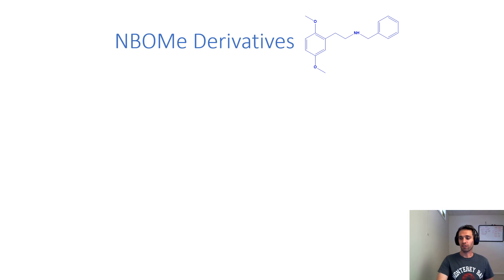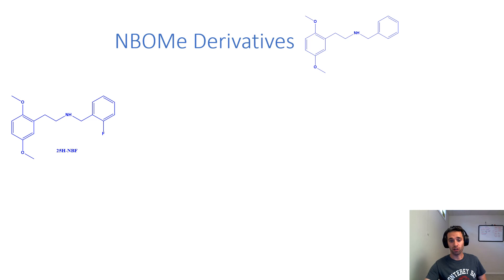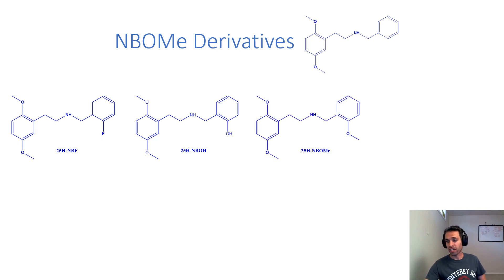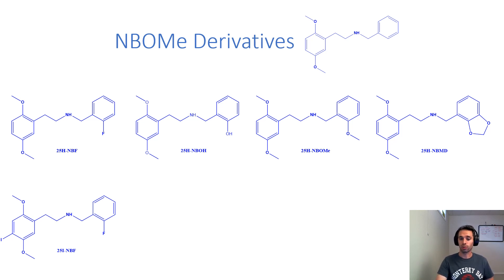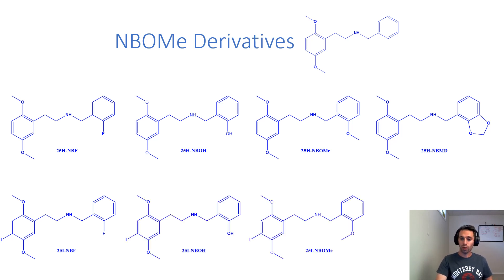The last few structural analogs studied are NBOM derivatives, which have the following core structure. The first is 25H-NBF, which has a fluorine coming off the phenyl ring. 25H-NBOH has an alcohol substituent on the phenyl ring instead. 25H-NBOM and BOME have a methoxy group coming off the ring, and 25H-NBMT has a dioxane ring. Then we have the iodinated versions — 25I-NBF, 25I-NBOH, 25I-NBOME, and 25I-NBMD — which are the same compounds but with iodine at the position one carbon away from the methoxy group, which we saw drastically increases potency.